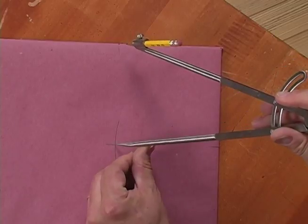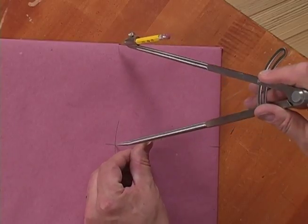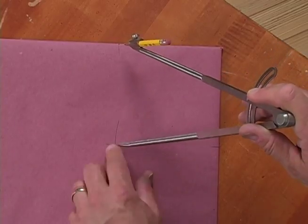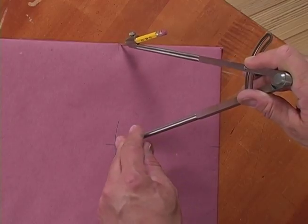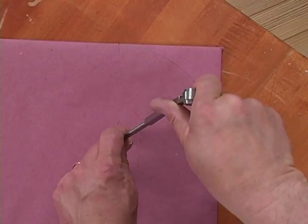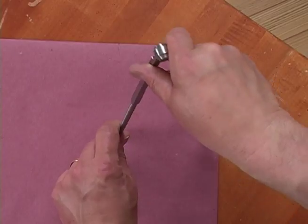Then at your start and stop mark, place the compass point here, and the pencil here. And scribe your arc from the start to the stop mark.